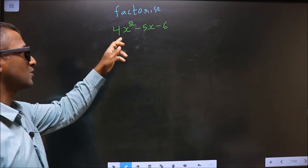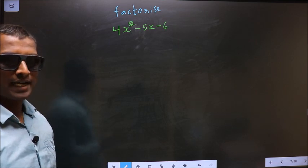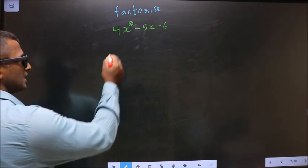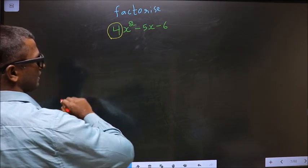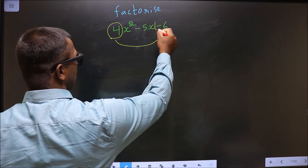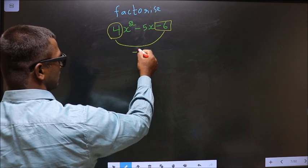Factorize 4x square minus 5x minus 6. To factorize, step 1: the coefficient of x square, which is plus 4 here, should be multiplied to the constant, that is minus 6. So 4 into minus 6 is minus 24.